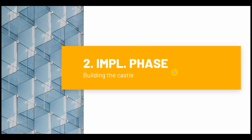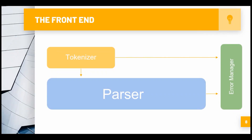Next is the implementation phase. Now it's time to build the castle. If you remember, we have a front-end, a back-end, and then a bytecode executable. So you have your tokenizer, your parser, and your error manager. The tokenizer sends data to the parser and then the parser runs. At any point, if the tokenizer fails, once the parser object gets instantiated it's going to check to see if there were any errors - and if there were any errors, it's not going to parse, because if you broke something in the tokenizer you'll probably break something even worse in the parser.